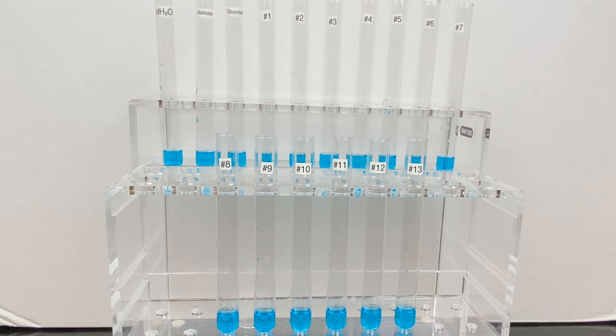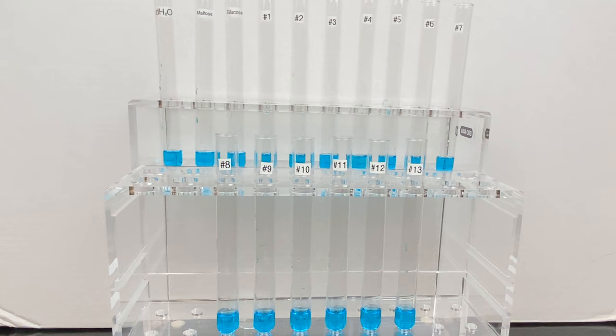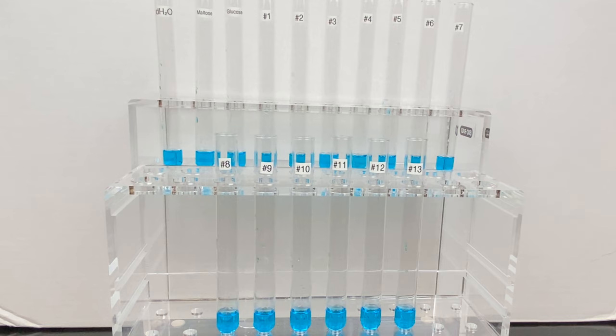This is a reagent that contains copper-2 acetate in a dilute acetic acid solution. When heated, an oxidation-reduction reaction will occur. This is the transfer of an electron from one chemical to another. Any monosaccharides in our solution will be oxidized and lose an electron, and the copper-2 acetate will be reduced, gaining an electron to become copper-1 oxide. This will create a red precipitate in the solution.